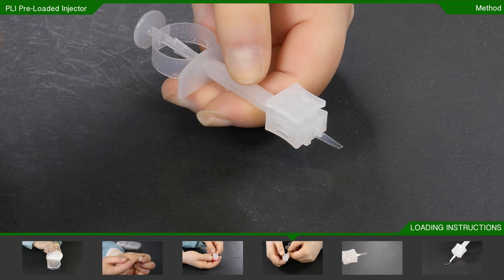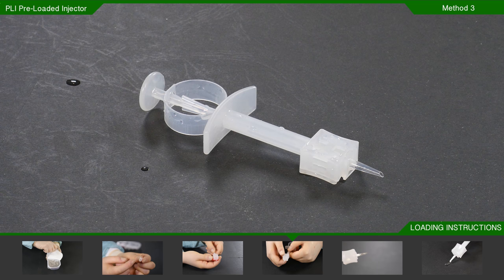Place the PLI on the sterile table with the loading tab facing down and press firmly on the PLI body. Whichever works for you. Either of these three methods is fine.